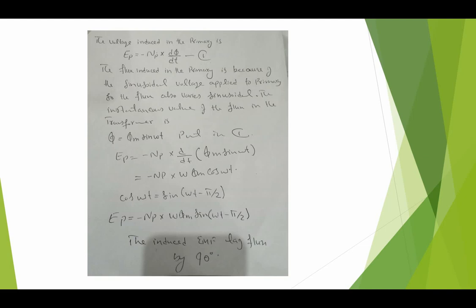We have studied that the flux leads the induced EMF by 90 degrees. In a transformer, the voltage induced in a primary is EP equal to minus NP, number of turns in primary, multiplied by d-phi by dt. The flux induced in the primary is because of the sinusoidal voltage applied to primary, so the flux also varies sinusoidally. The instantaneous value of the flux is phi equal to phi maximum sine omega-t.